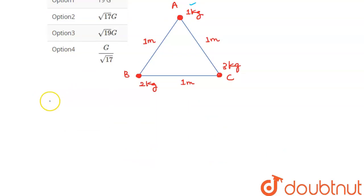First of all, we will get the force on mass of 1kg due to the mass of 2kg, that is force on A due to B. So force on A due to B, let's call it F1.